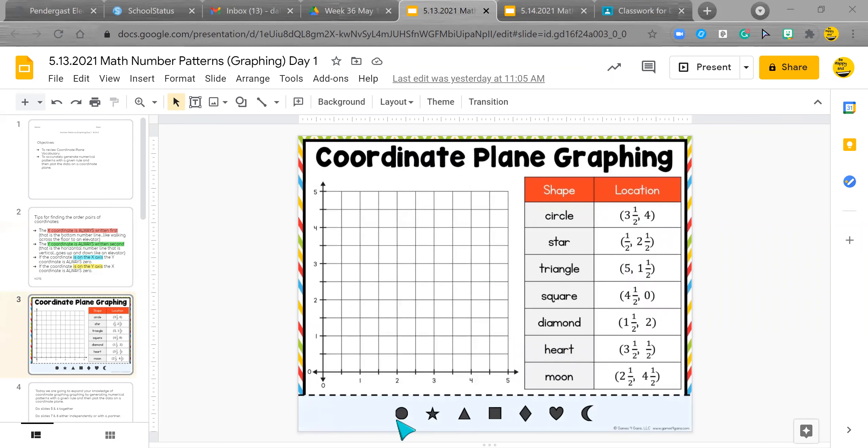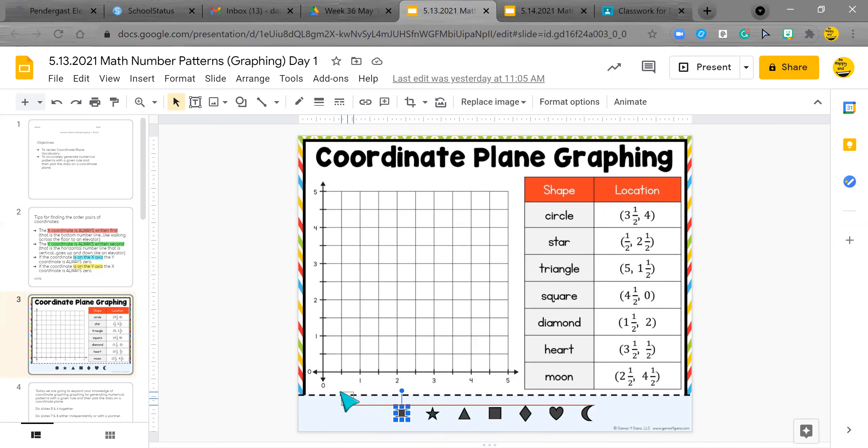We're going to do this one. Remember, we're just going to practice plotting. I'm going to take the circle and I need to go three and a half up to four. And then I do the star. I go to half to two and a half. Practice, practice, practice. It's nice when we know what we're doing and we practice to make sure we keep our skills strong. And that's all we are doing right here.